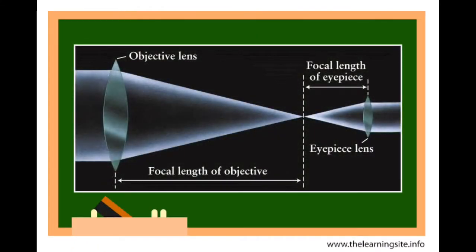Most refracting telescopes use two main lenses. The largest lens is called the objective lens, and the smaller lens used for viewing is called the eyepiece lens.